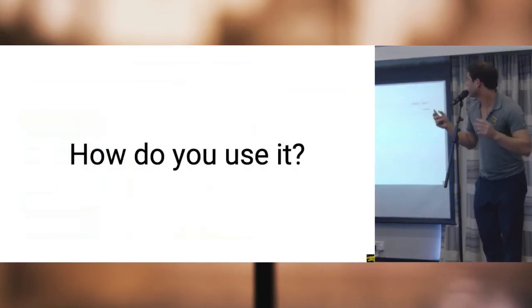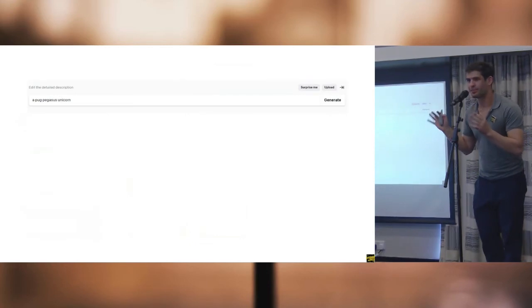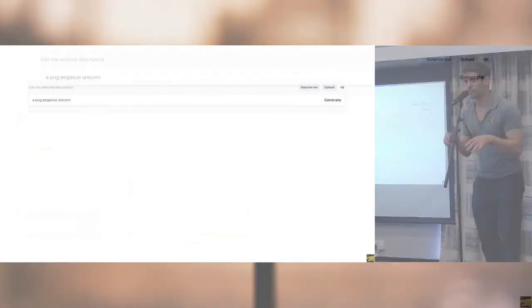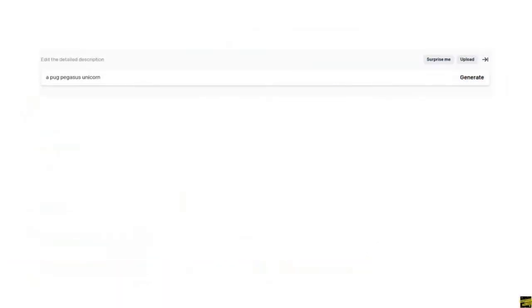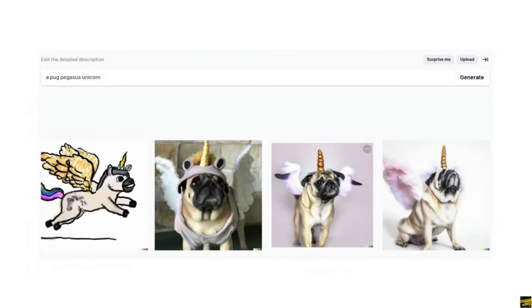So how to use it. So this is the DALI interface. You get a text box. You type in the thing you want, which is, in my case, a pug pegasus unicorn. And then you hit generate, and there you go. So it takes about 30 seconds.